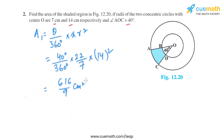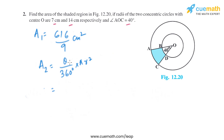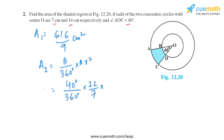Now let's find the area of the smaller sector using the same formula: theta divided by 360 degrees multiplied by pi R squared. So it is 40 degrees divided by 360 degrees, multiplied by 22/7, and the radius of the smaller sector is 7 centimeters squared. Solving this, we get the area of the smaller sector as 154 divided by 9 square centimeters.